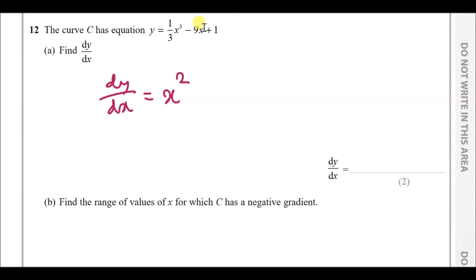When the power drops to zero, the x vanishes, and you drop the 1 to the ground, so 1 times 9 gives 9. If you have a constant like plus 1, it just vanishes — becomes 0 — because there are no x terms to differentiate with respect to x. So dy/dx equals x squared minus 9, and that's it.